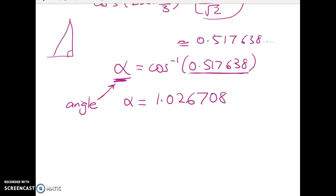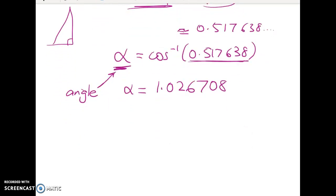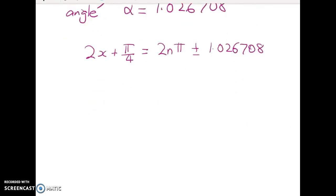So when we chuck that into our calculators, we get α is equal to 1.026708, and I'm working in radians. Now to get the general solution, we're sticking with what I've got here. Now that should be π/4, not π/3.